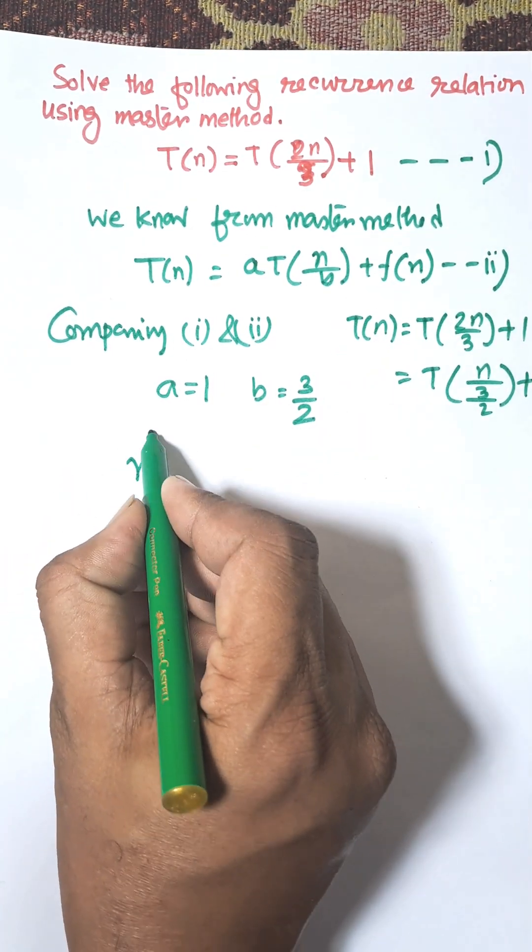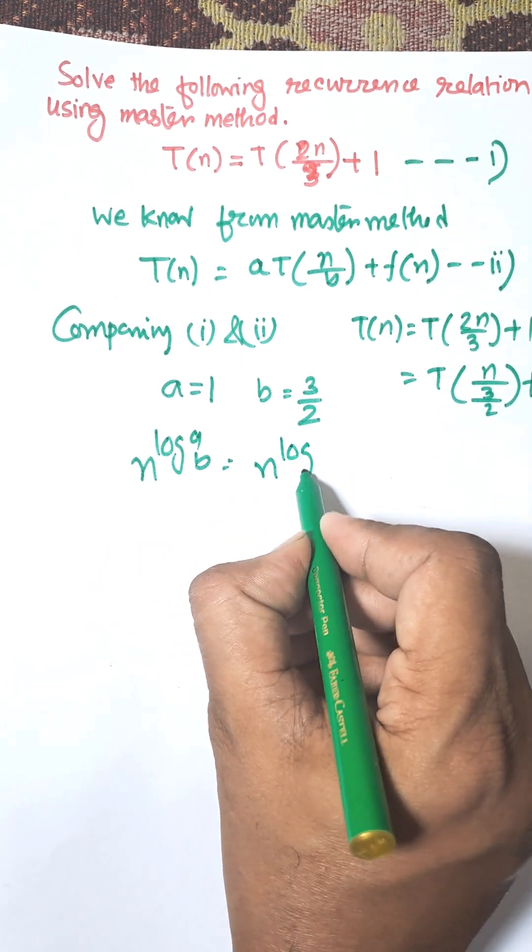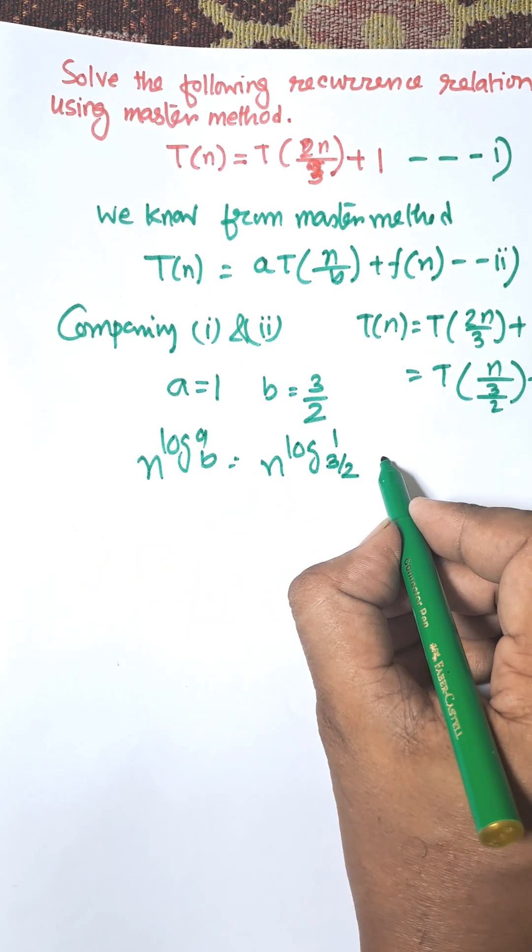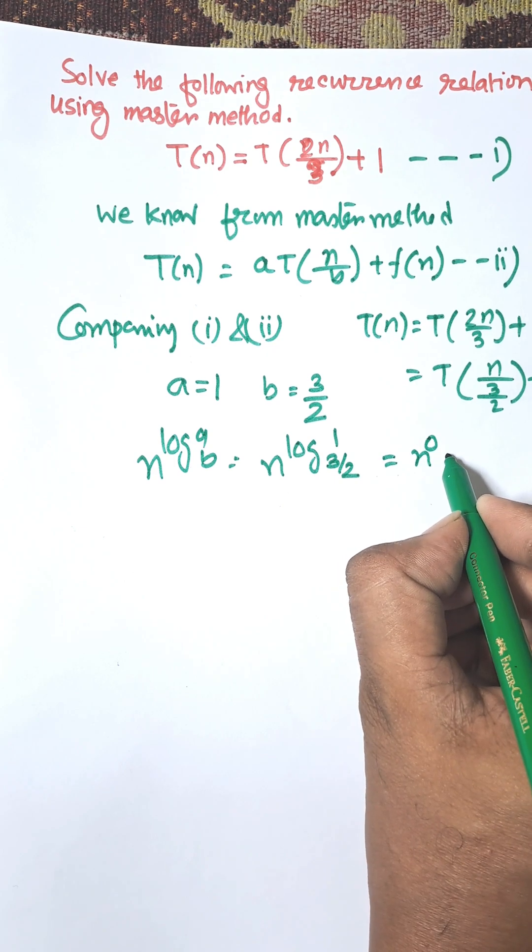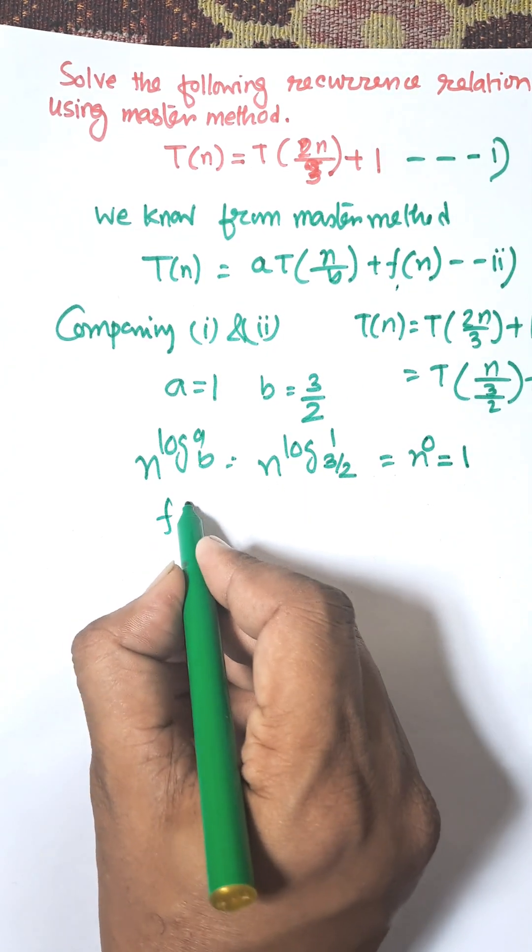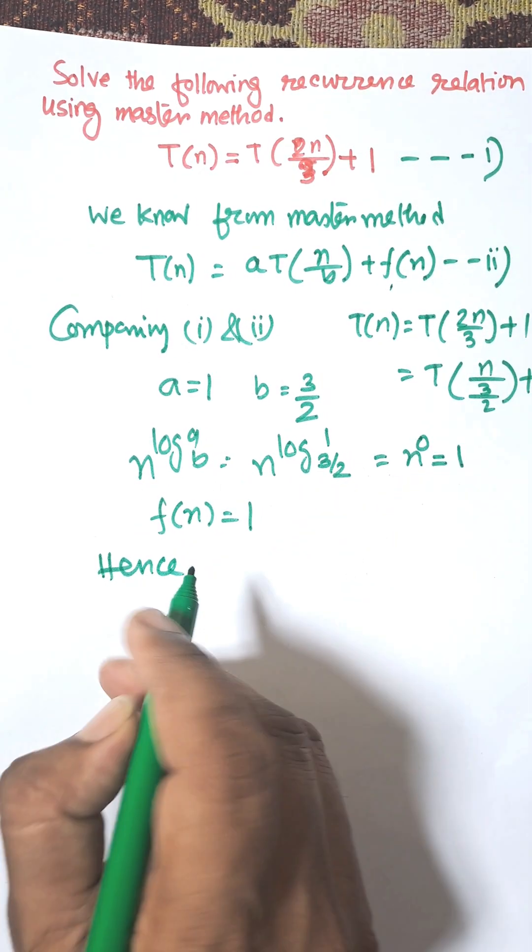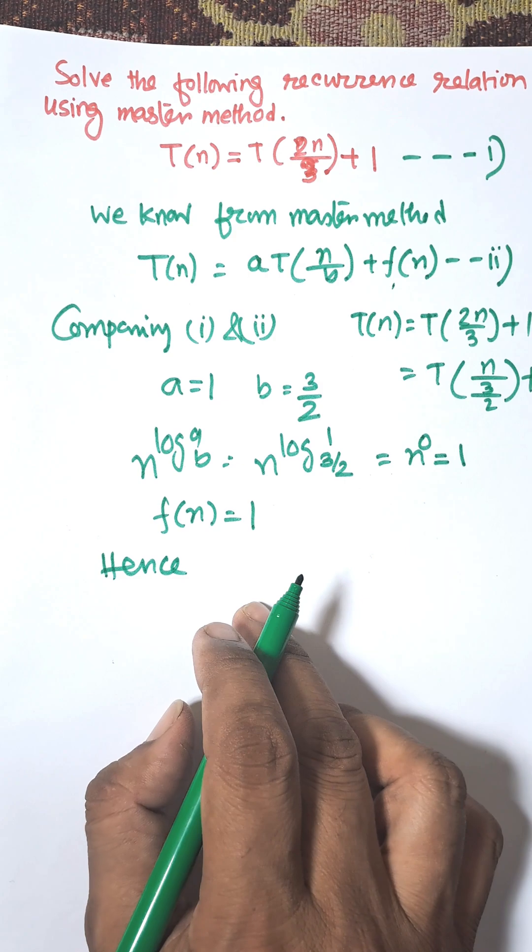Now n^(log_b a) equals n^(log_{3/2} 1). We know log 1 equals 0, so we mean n^0. Here n^0 means 1. Here f(n) is also 1. So both are equal.